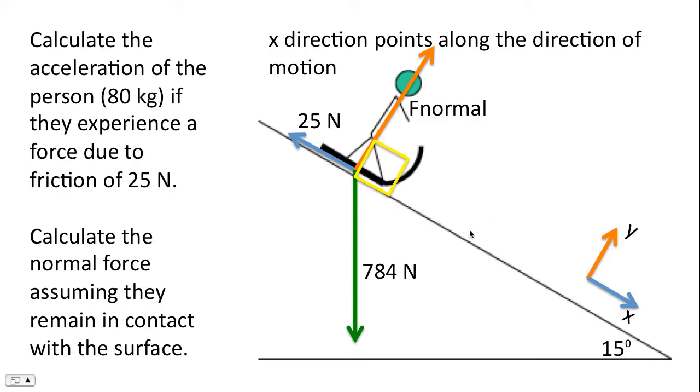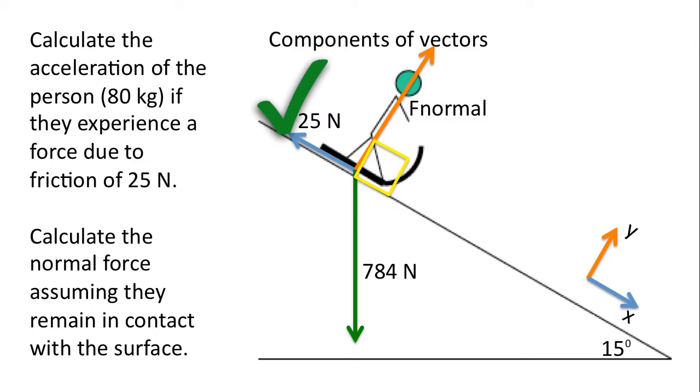We're going to do it such that the x direction always points along the direction of movement. So the sled is going down the hill, down the inclined plane. The x direction points in the same direction that the sled is accelerating in. Now, we're going to have to find the components of the vectors. Well, 25 newtons, we don't have to do anything with that vector because it lines up parallel to the x axis. The normal force is a vector as well, where we don't really have to do anything with it, in the sense that it lines up parallel to the y axis.